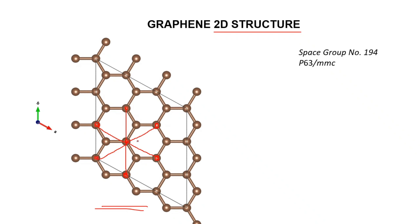So what will be the unit cell of graphene? Let's construct the unit cell from the lattice points. Considering the alternate atoms, we can see this and this is the alternate atom, and this is the alternate atom. This rhombus shape is the unit cell of graphene.